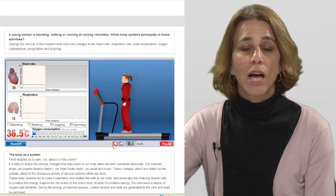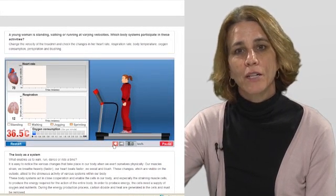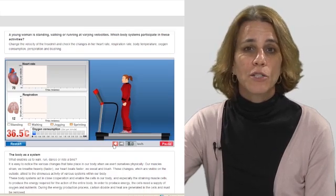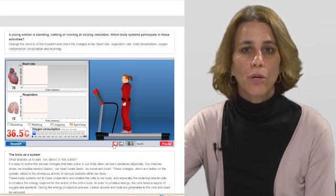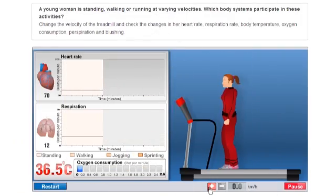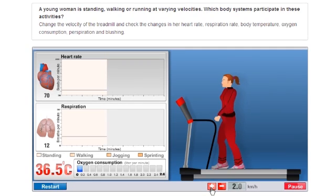This simulation is about how different systems of our body function together. This simulation shows the body in motion, walking and running. We see a girl standing on a treadmill. We can change the speed of the treadmill and see the girl walking and then running.